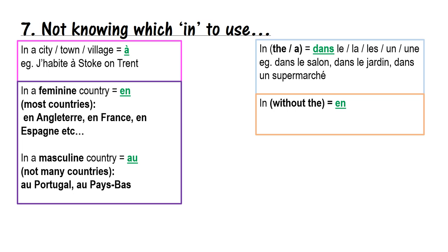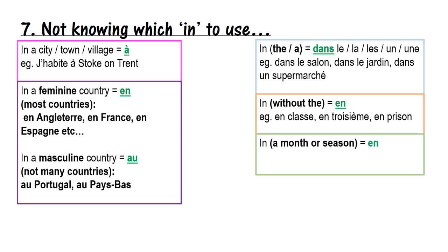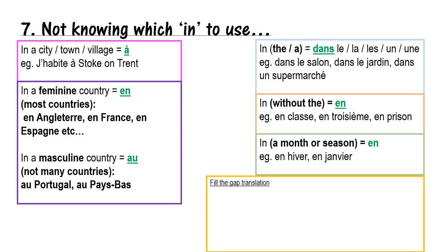If you're saying 'in' without 'the' and not referring to a country or city, use en again: en classe — in class, en troisième — in year 10, en prison — in prison. If you're talking about a month or a season, use en: en hiver — in winter, en janvier — in January.